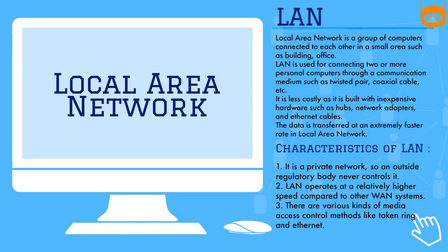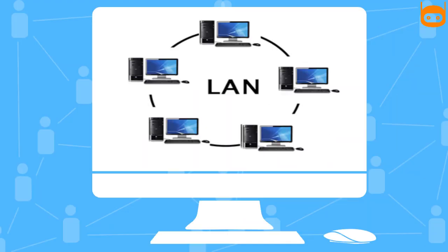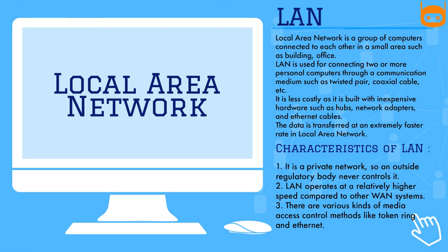Local Area Network is a group of computers connected to each other in a small area such as a building or office. LAN is used for connecting two or more personal computers through a communication medium such as twisted pair or coaxial cable. It is less costly as it is built with inexpensive hardware such as hubs, network adapters, and Ethernet cables.